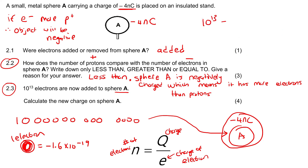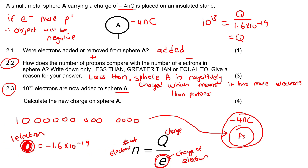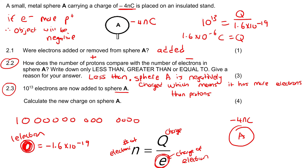So we say 10 to the 13 multiplied by 1.6 times 10 to the negative 19, which gives us 1.6 times 10 to the negative 6 coulombs. Note that when using this formula we don't put the negative sign in, but we must remember that the result is actually negative because they are electrons.